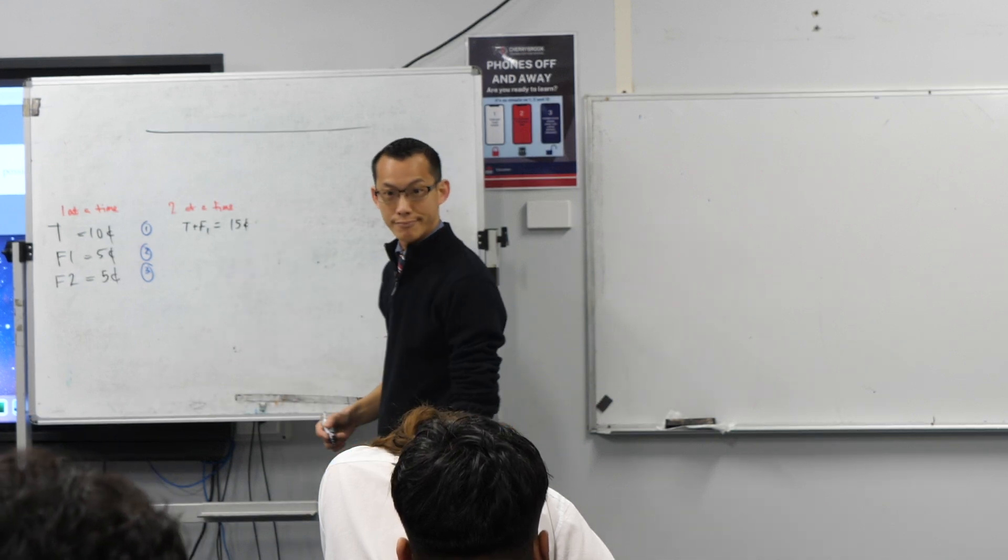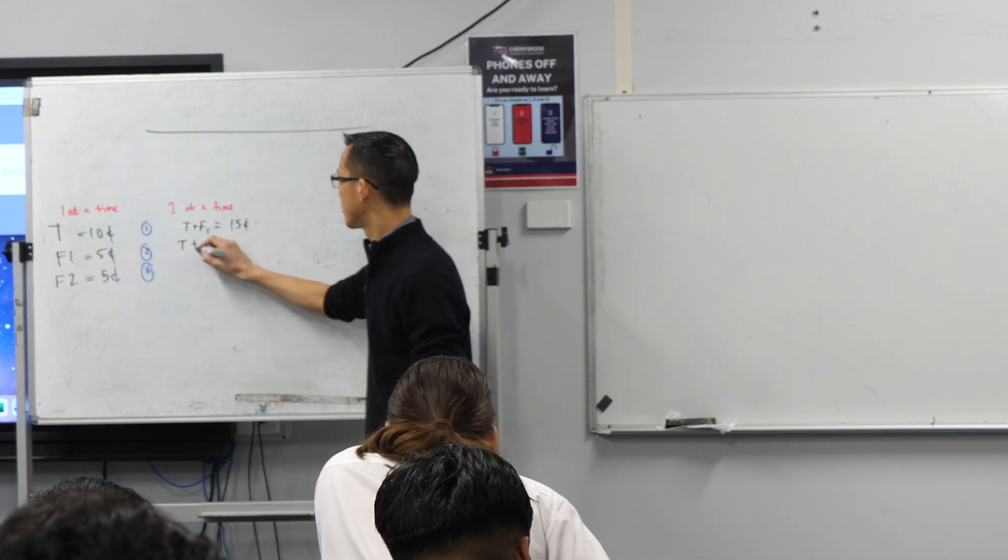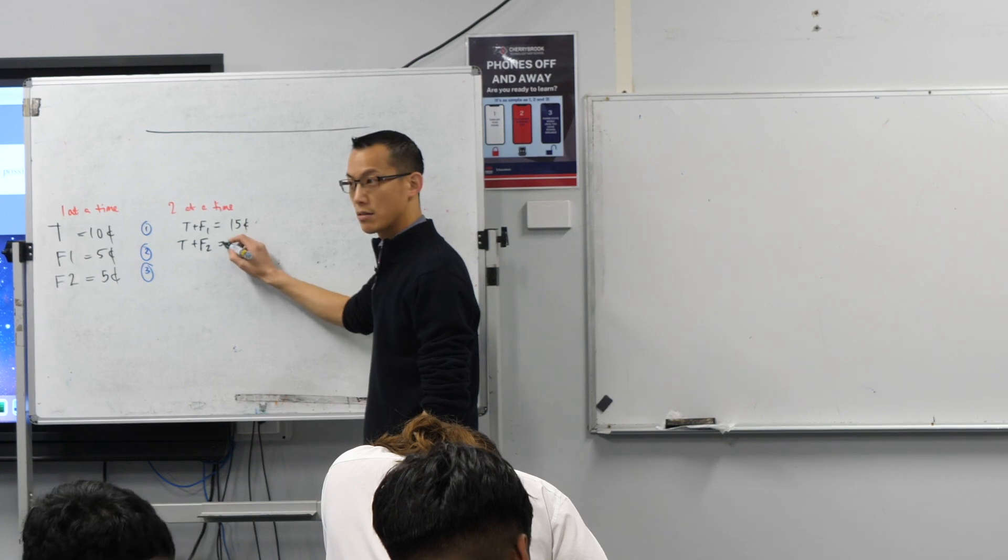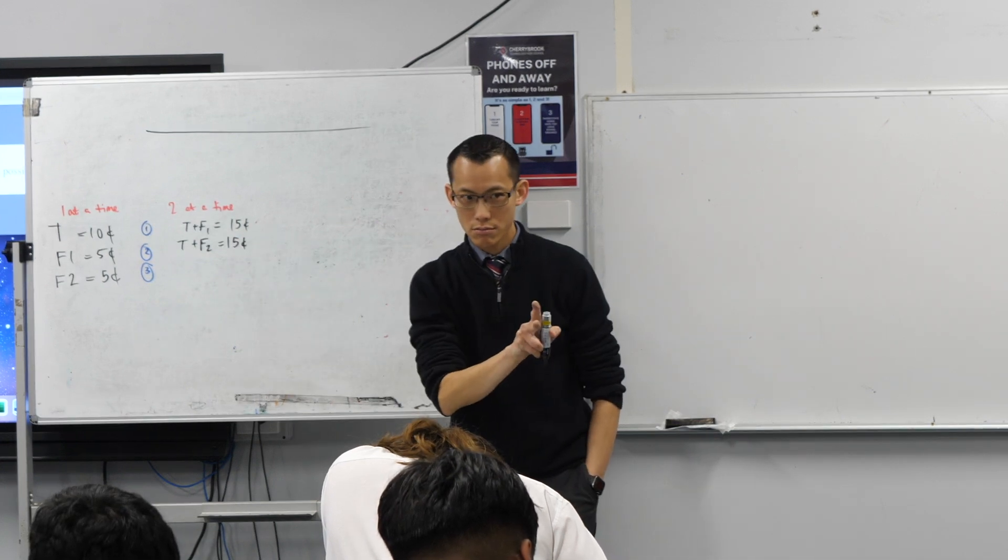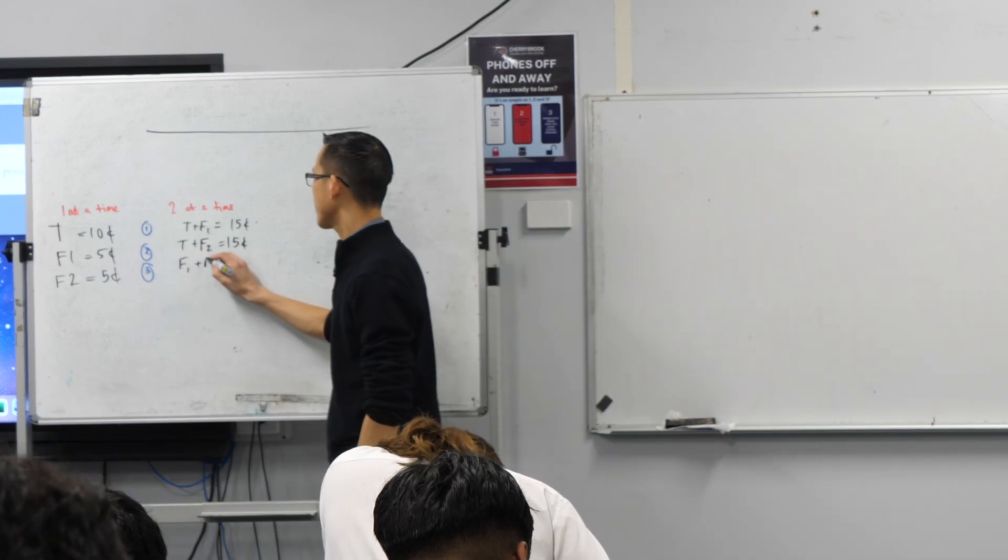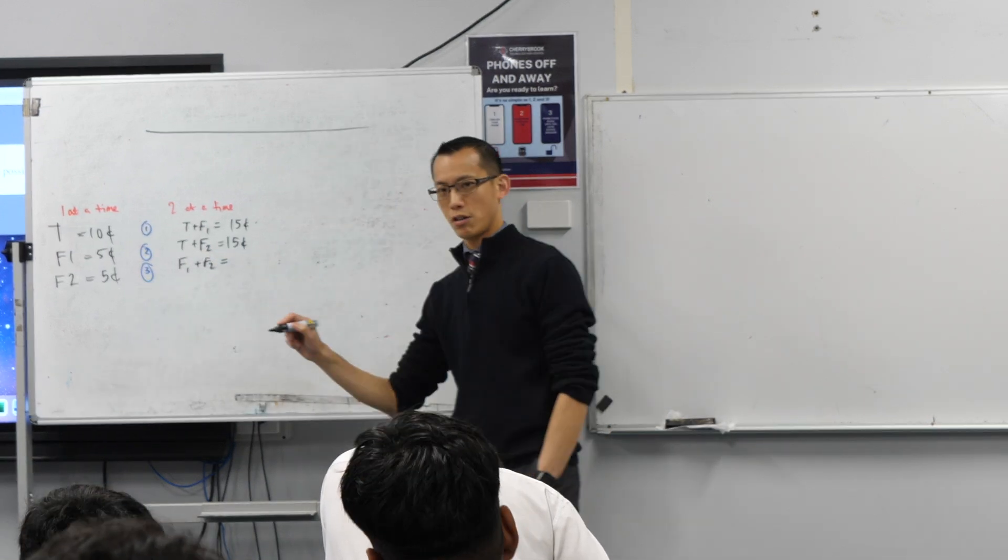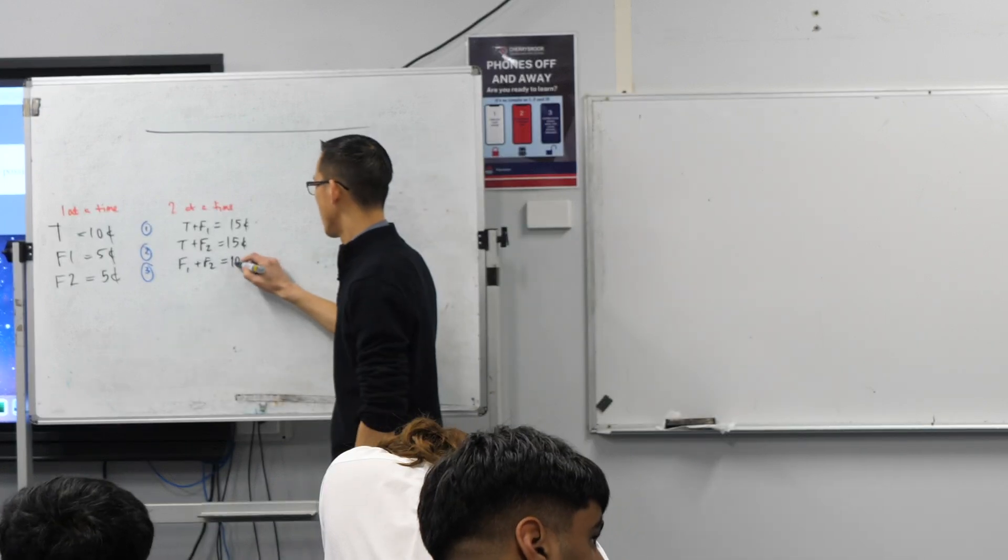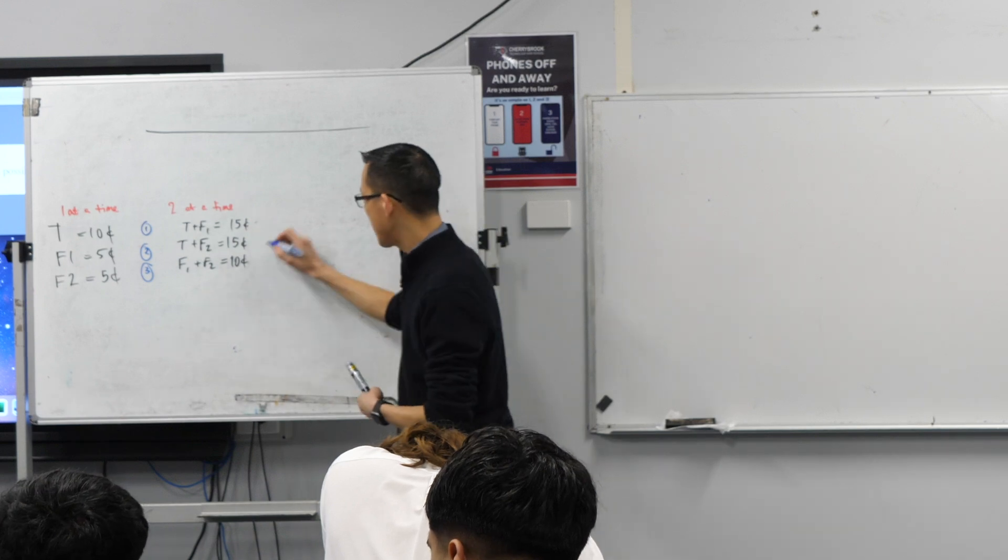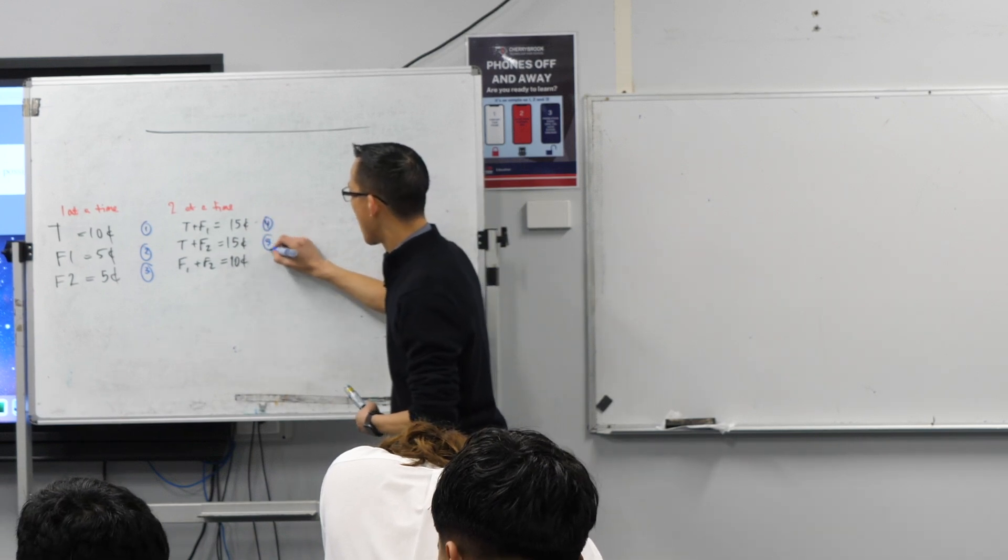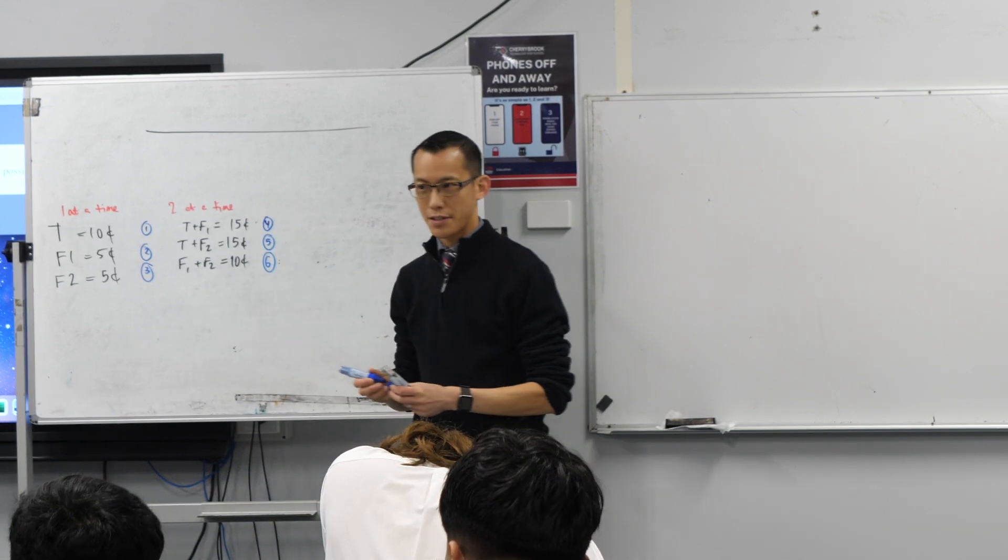What's another combo? T and F2. That is also 15 cents. And then there's one final way to do two. F1 and F2. And that's going to give us a total of 10 cents because they're five at a time. So here are options. We had one, two, and three. Here are options four, five, and six.